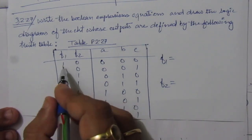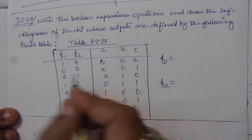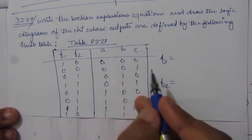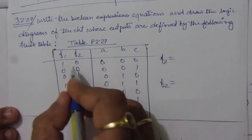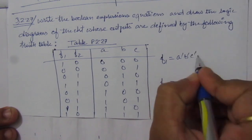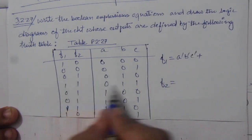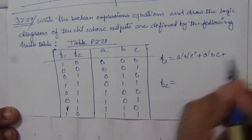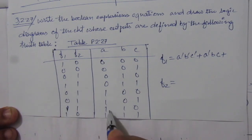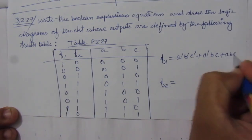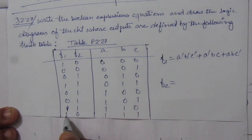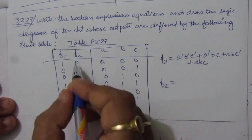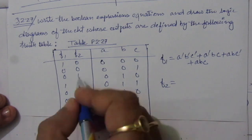Whenever the output is 1, you write those respective minterms. A 0 input means it is complemented. So f1 equals: a-bar b-bar c-bar, plus a-bar b c, plus a b c-bar, plus a b c.